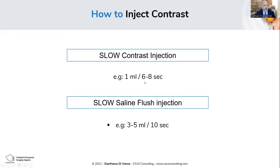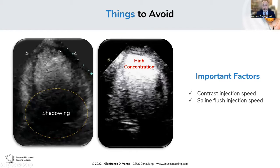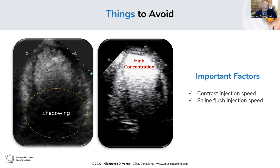The recommendations for contrast injection: slow contrast injection followed by slow saline flush. As an example, one milliliter in six to eight seconds, then three to five milliliters of saline very slowly. This matters because injecting too fast can easily cause shadowing and high concentration at the apex. Remember that the ultrasound beam has to pass through everything; if you have high bubble concentration you will have difficulty achieving a homogeneous cavity. To fix that you need to wait 20 to 30 seconds, but you lose that time, which is problematic especially in stress echo.